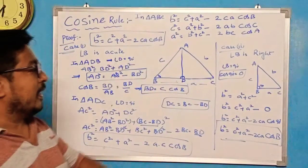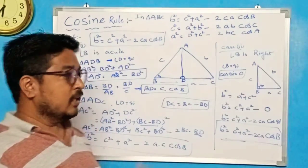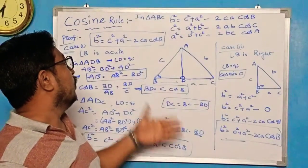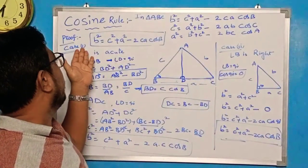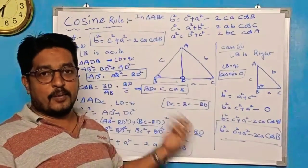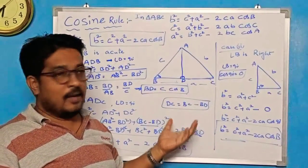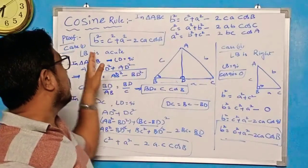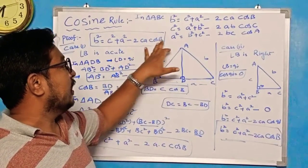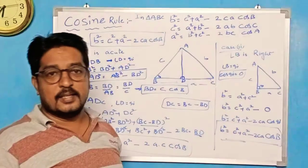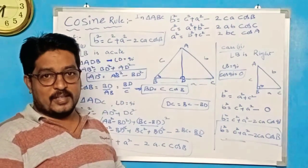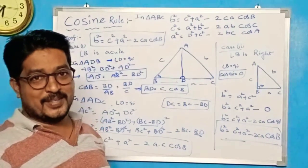Similarly, we can prove for Case 3 where angle B is obtuse, giving b² = c² + a² − 2CA·cosB. This completes the proof of the cosine rule. Thank you very much.